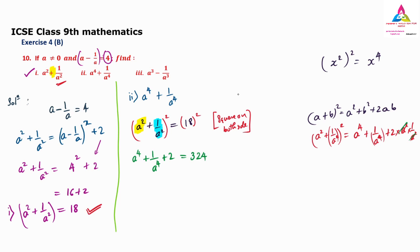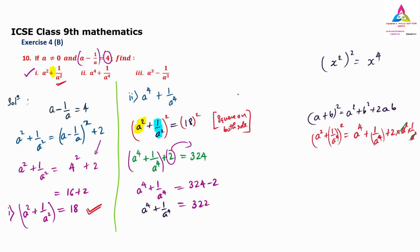Shifting the 2 to the right-hand side: a raised to 4 plus 1 by a raised to 4 equals 324 minus 2, which is 322. So the second answer is 322.